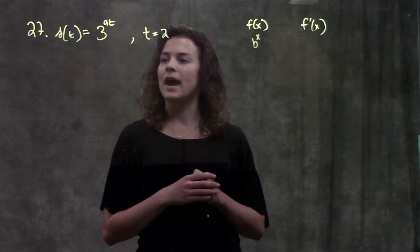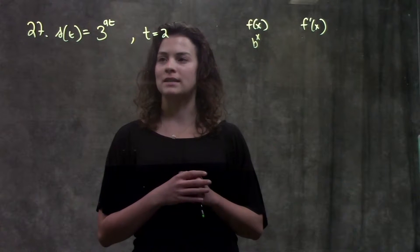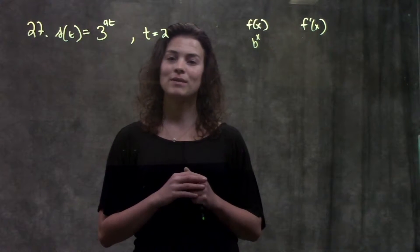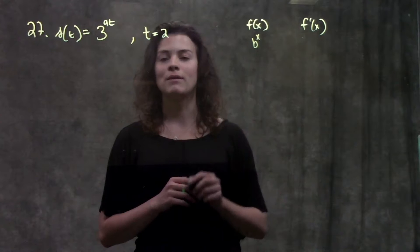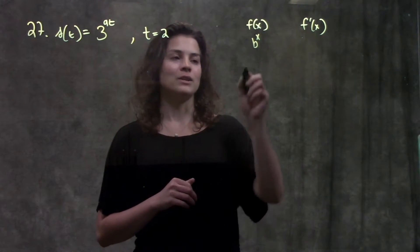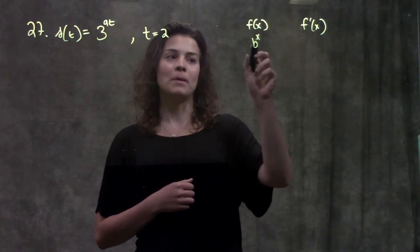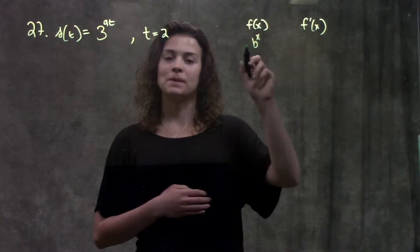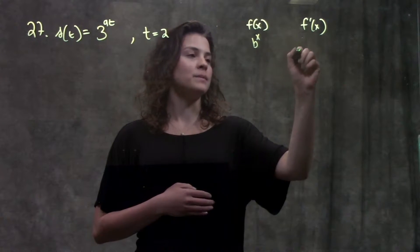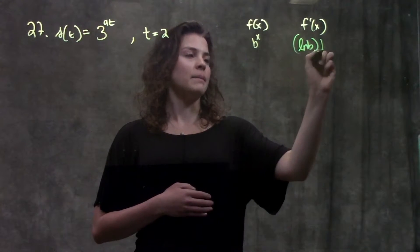We're given this function s(t) equals 3 to the 9t. In order to find the derivative of that, we're going to use a rule that we learned in this section: b to the x. Remember, to find the derivative of a function that's b to the x, it just becomes ln of b times b to the x.